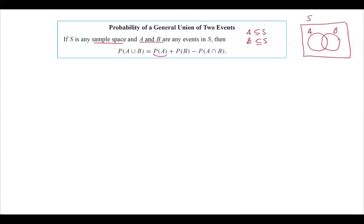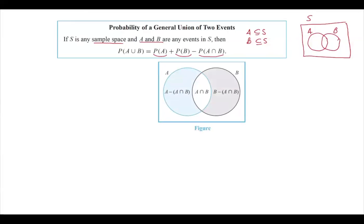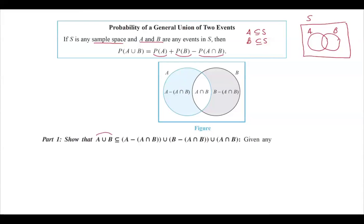Then the probability of their union equals the probability of the first event plus the probability of the second event minus the probability of their intersection. But how is that possible? We can visually see this: the blue shaded region on the left is A minus the intersection of A and B, and the gray shaded region on the right is B minus the intersection of A and B. We will show that A∪B equals (A minus A∩B) ∪ (B minus A∩B) ∪ (A∩B), and that these three sets are mutually disjoint.